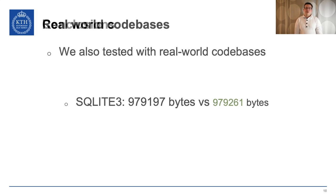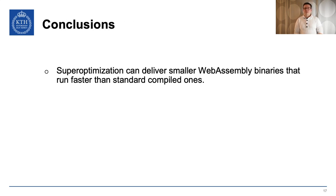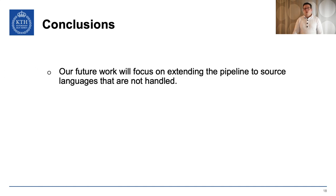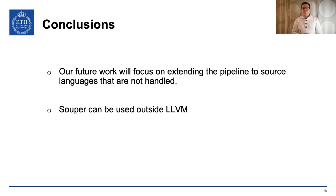To sum up, super-optimization on WebAssembly can deliver smaller binaries, which means faster delivery to clients. As mentioned, this super-optimized code also behaves faster than standard compilations. We want to remark that super-optimization is a complementary technique to pre-existing optimization techniques and not a replacement. Our future work will be focused on handling source code not currently handled by our pipeline. Also, Super can be used outside the LLVM toolchain — if you port any language to Super's internal representation, you can have super-optimization outside the LLVM toolchain.